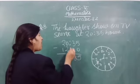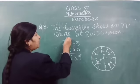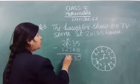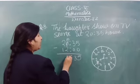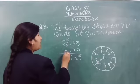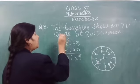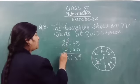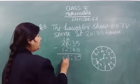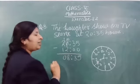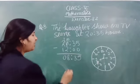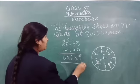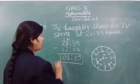Now, this 0 will be 10. 10 minus 2 is 8. And this 2 is 1. 1 minus 1 is 0. So this is our time.